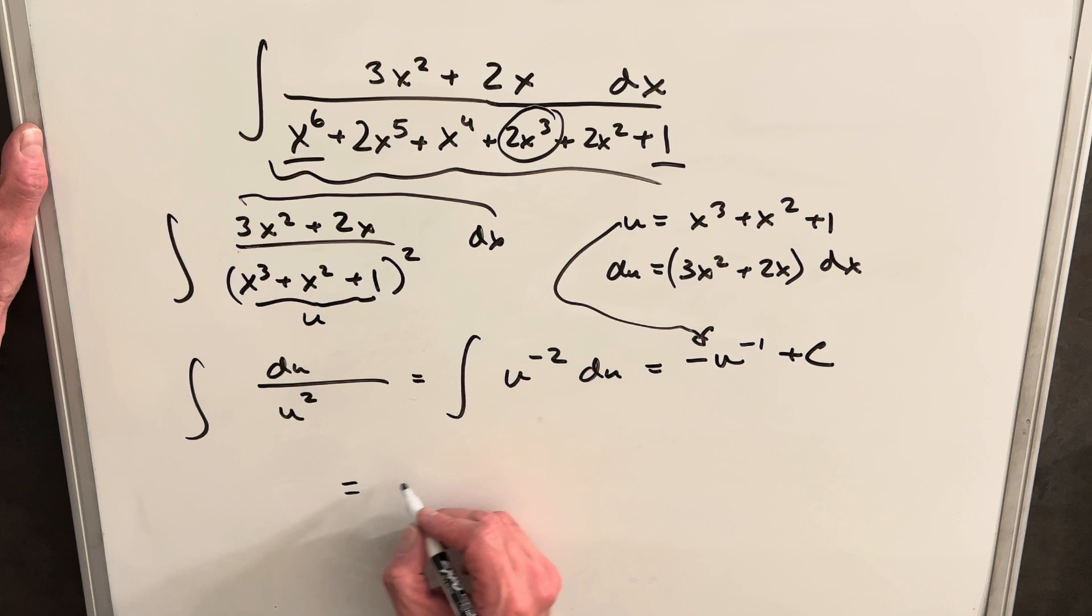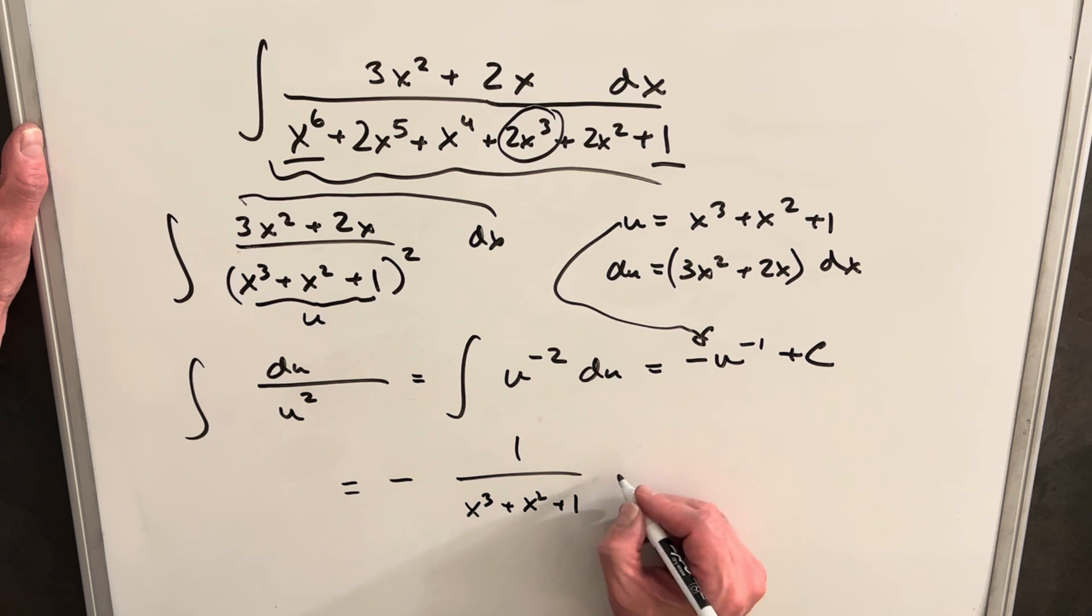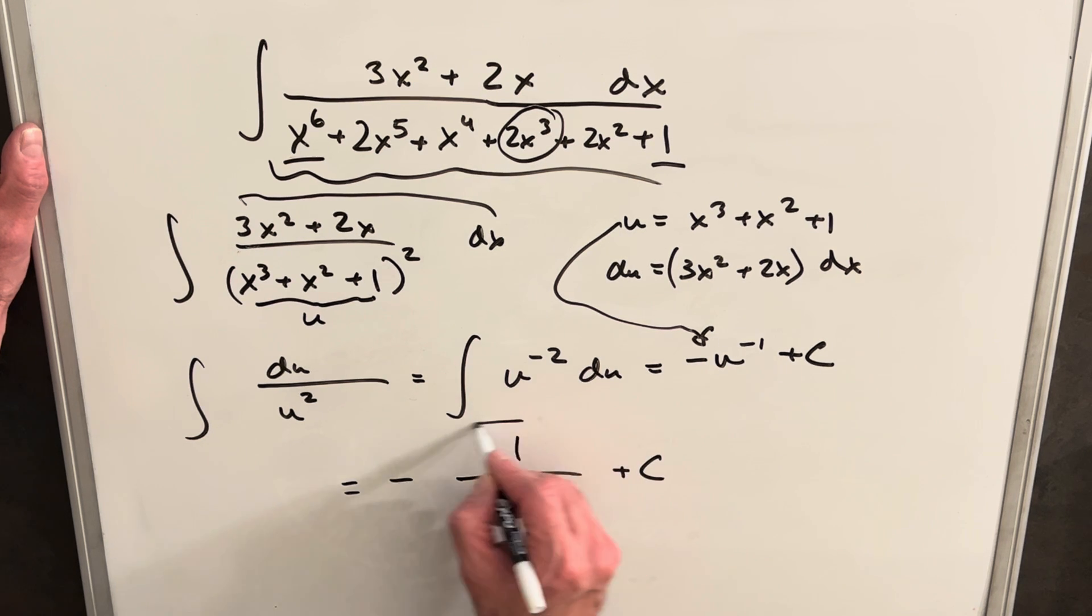Okay, and let's just back substitute with our u and finish this off. For our final answer, we're going to have negative 1 over x cubed plus x squared plus 1 plus c, and we're done.